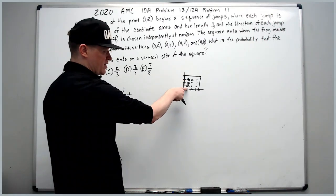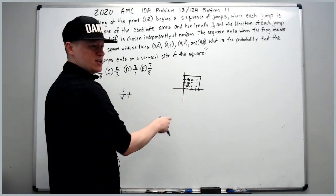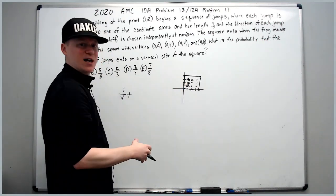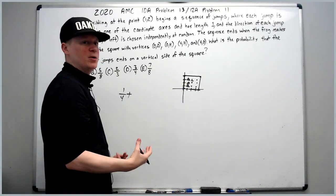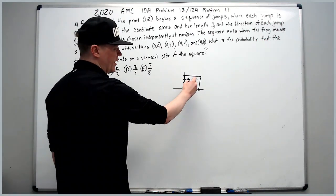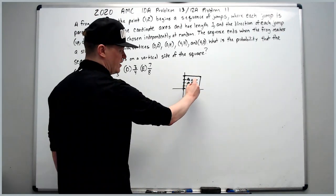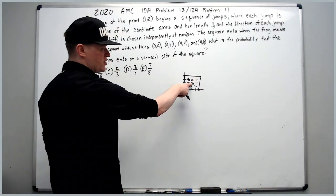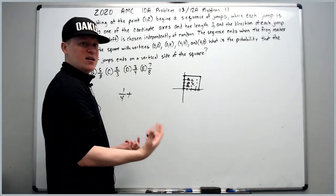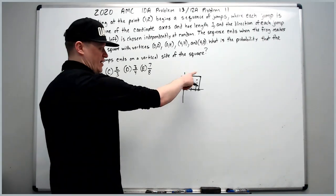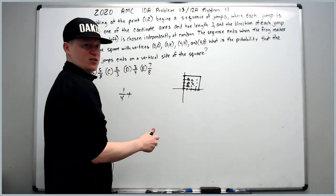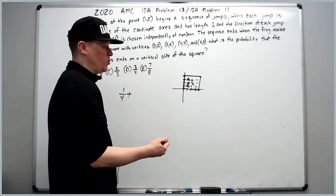From the middle position — if the frog takes its first jump to the center — there's an equal chance it reaches any of the four sides, so the chance of reaching the vertical sides is also 1/2.